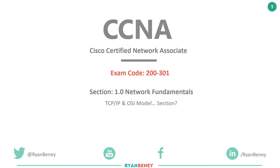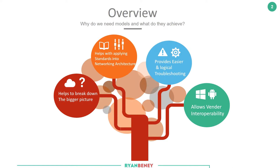I want to give an understanding of why these models are important and what they allow us to achieve. Here are four reasons why we actually use models: they help us break down the bigger picture to apply standards into network architecture, they provide easier and logical troubleshooting, and they allow vendor interoperability. Keep in mind that these models don't actually physically exist — they're just a theoretical model that allows us to apply it to networking and understand how protocols interact with one another.